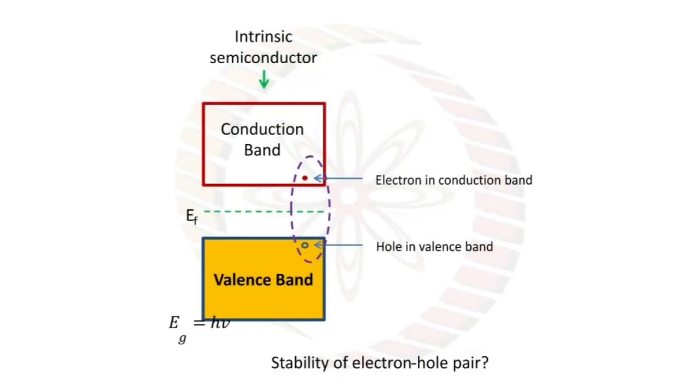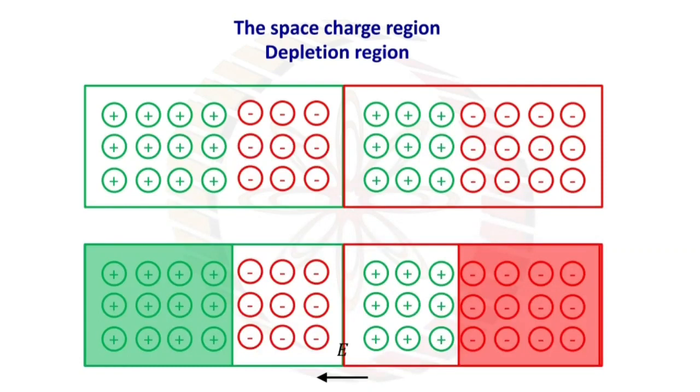Now we have to see the stability of electron-hole pair for intrinsic semiconductor: an electron in conduction band and a hole in valence band, when combined together, neutralize themselves. Now the concept of depletion layer or space charge region. In semiconductor physics, the depletion region is an insulating region within a conductive doped semiconductor material where the mobile charge carriers have been diffused away or forced away by an electric field. The only elements left in the depletion region are ionized donor or acceptor impurities. The depletion region is so named because it is formed from a conducting region by removal of all free charge carriers, leaving none to carry a current.